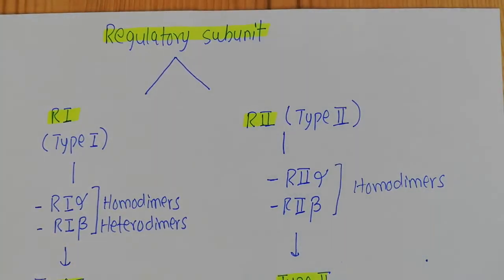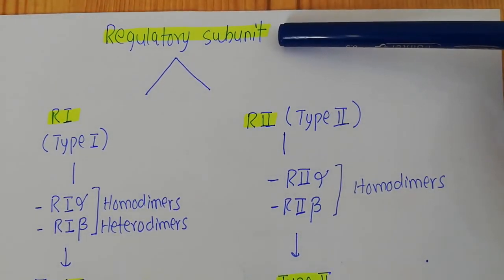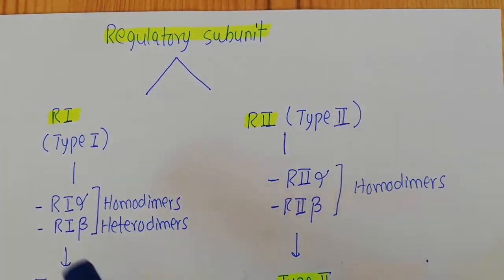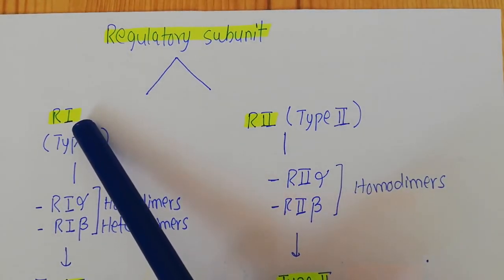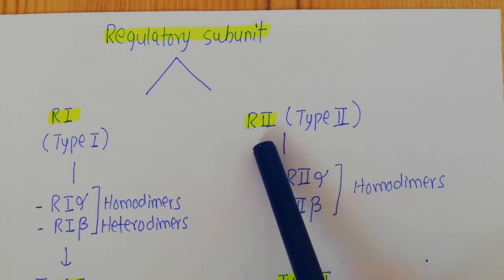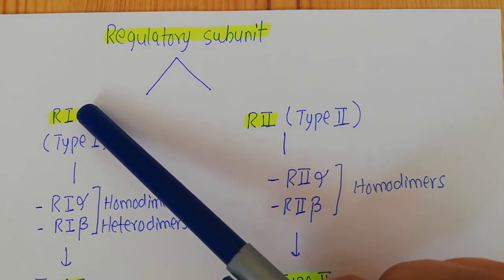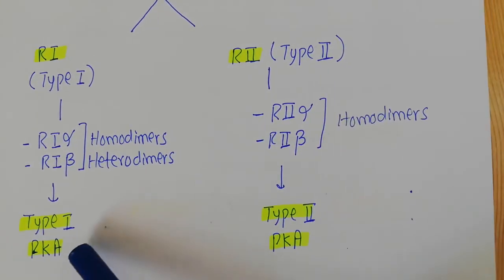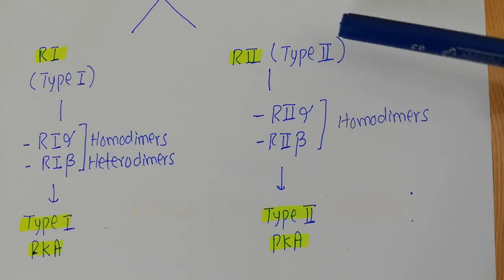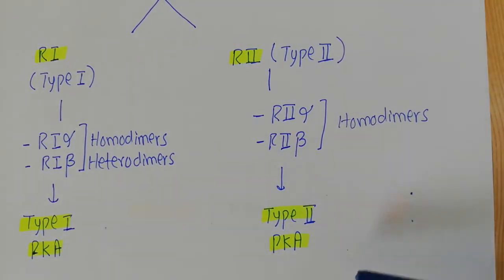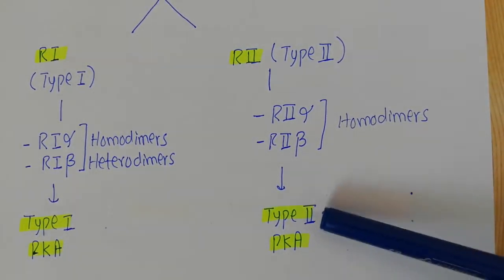There are two kinds of protein kinase A, and these two types are based on the regulatory subunits present. The regulatory subunits in protein kinase A are of two types: one type is known as the R1 regulatory subunits and the other is known as the R2 regulatory subunits. If a protein kinase A uses R1 regulatory subunits, it is known as type 1 protein kinase A, and if it uses R2 regulatory subunits, it is known as type 2 protein kinase A.